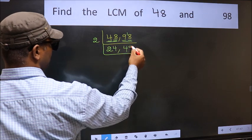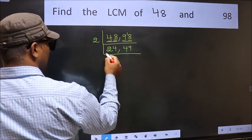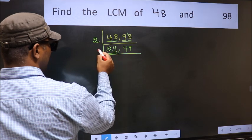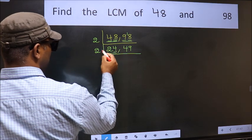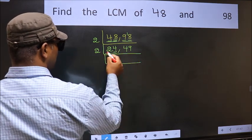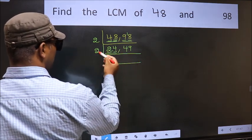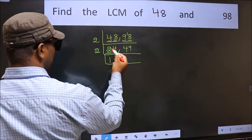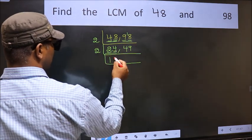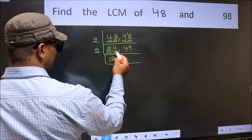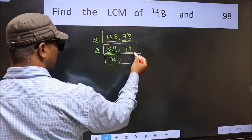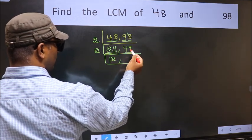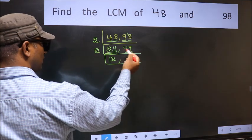Now we have 24. Last digit 4 is even, so take 2. First number 2 — when do we get 2 in the 2 table? 2 ones are 2. The other number 4 — when do we get 4 in the 2 table? 2 twos are 4. Now the other number 49 — last digit 9, not even, so this is not divisible by 2, so we write it down as it is.